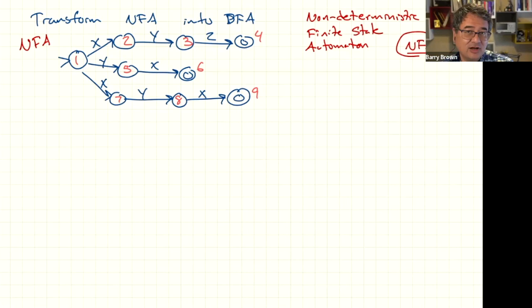So this is in contrast with a deterministic finite state automaton, in which case there's only one transition per state to follow. There's only one transition labeled X, and there's only one transition labeled Y. There's only one transition labeled Z. So anytime you see that symbol, you know which transition to follow.